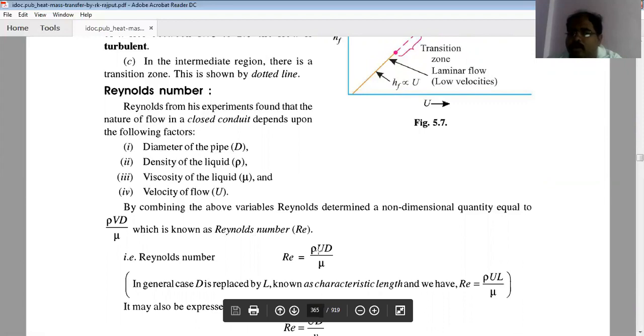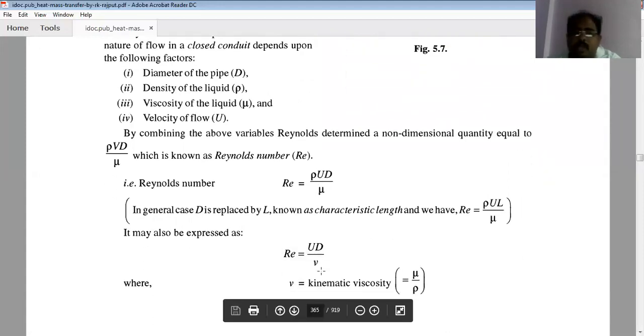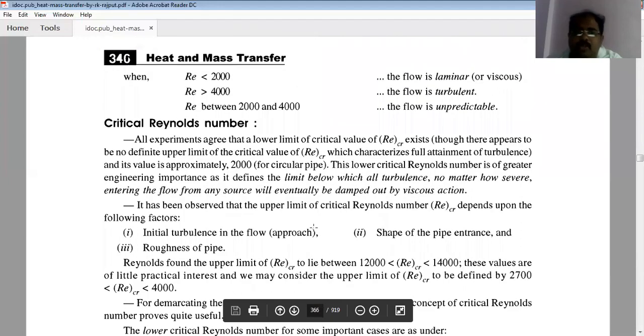Re equals rho times u times d divided by mu. Rho is the density, u is the velocity, d is the diameter, and mu is the viscosity of the fluid. Also, mu divided by rho is nu, which is called kinematic viscosity.